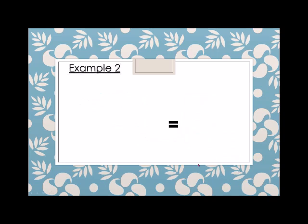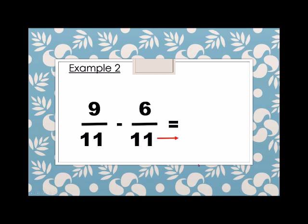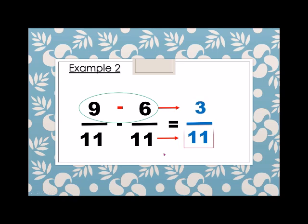Example number 2, we have 9 over 11 minus 6 over 11. Since we have the same denominator, the denominator of the answer is 11. And then the numerator, we simply subtract. So 9 minus 6, we have 3. Therefore, 9 over 11 minus 6 over 11 is equals to 3 over 11.